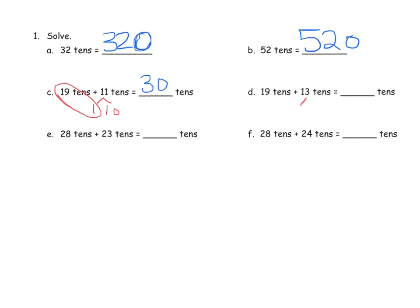And then similarly, over here, we can make this a 1 plus 12. So 19 tens plus 1 ten, that gives us 20. 20 plus 12 gives us 32 tens.